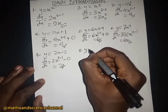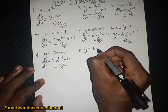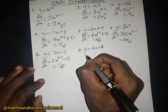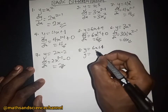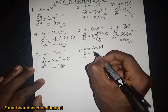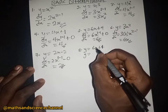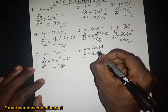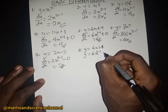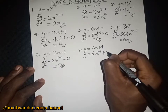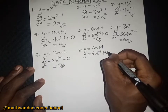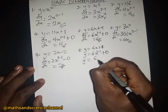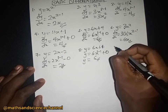Another one: y equal to 6x plus 1. The dy/dx will be equal to — we drop the 1 from 6x and subtract 1 from the exponent, then we differentiate the constant and get zero — so we just have 6.